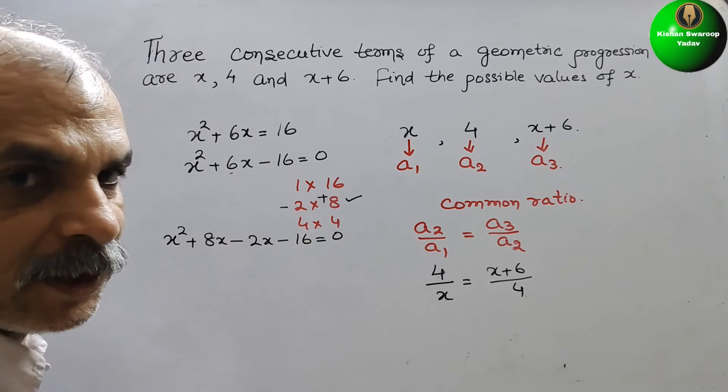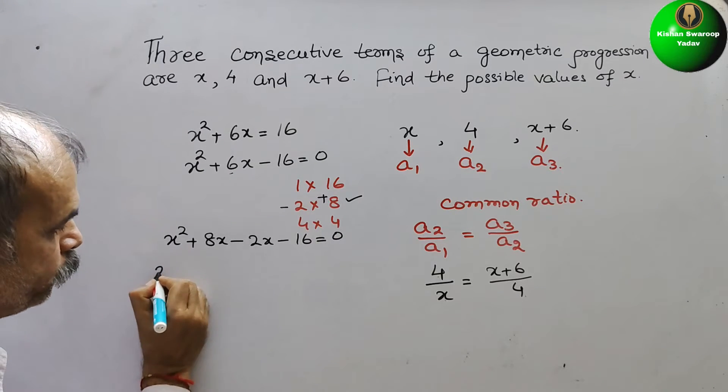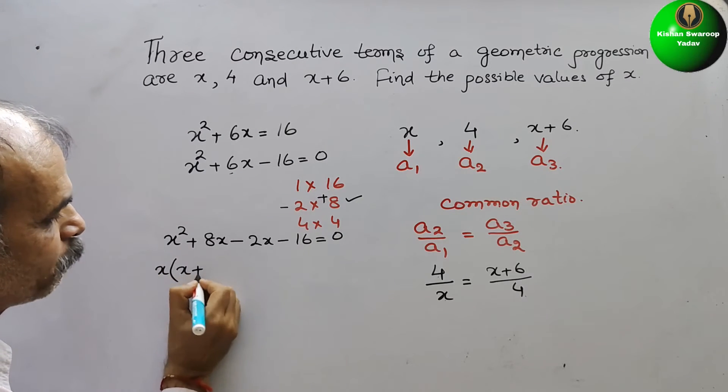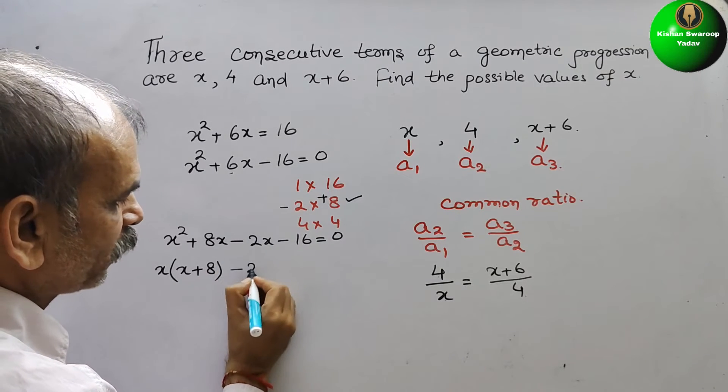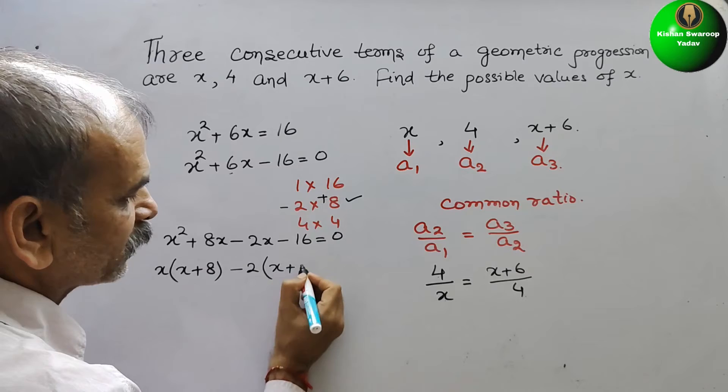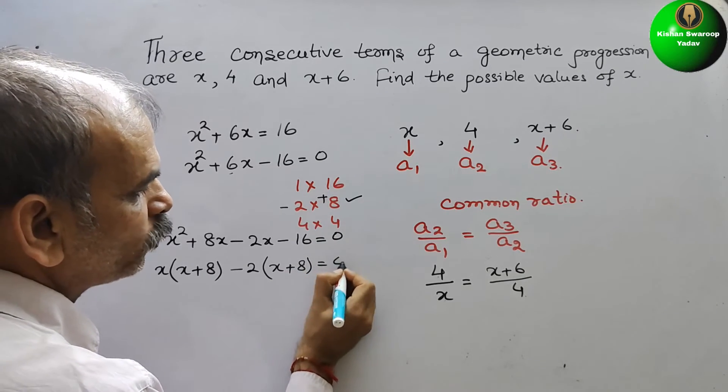Here you can see x is common in the first two. You will get x plus 8. Next, minus 2 is common. Again you will get x plus 8 equals 0.